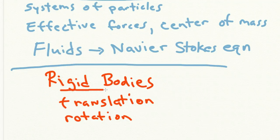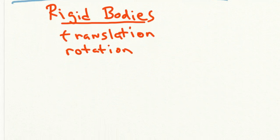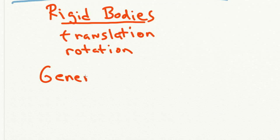And in fact, any motion of a rigid body can be described as a combination of translation and rotation. We will also talk about these other topics.